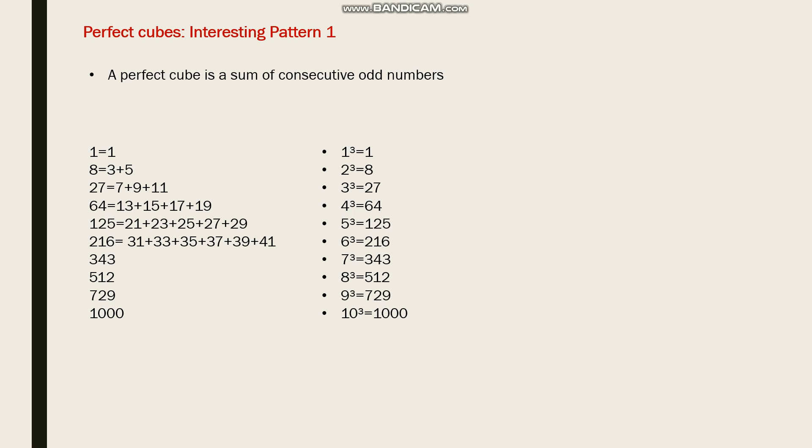Perfect cubes: A perfect cube is the sum of consecutive odd numbers. Let me consider 8 - it's a perfect cube, which is the sum of consecutive odd numbers: 3 + 5. You can take 216, which is the sum of consecutive odd numbers: 31 + 33 + 35 + 37 + 39 + 41.